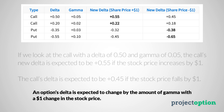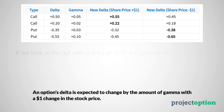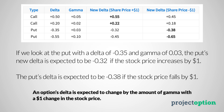If we're looking at a put option with an initial delta value of -0.35 and a gamma value of 0.03, then if the stock price increases by one dollar that put option's delta is expected to change to -0.32. On the other hand, if the stock price decreases by one dollar, that put option's delta is expected to change to -0.38. So the put option's delta changes by the amount of its gamma, which is 0.03.